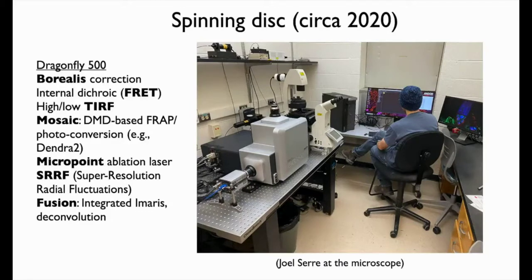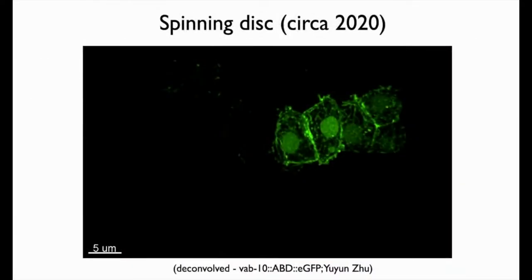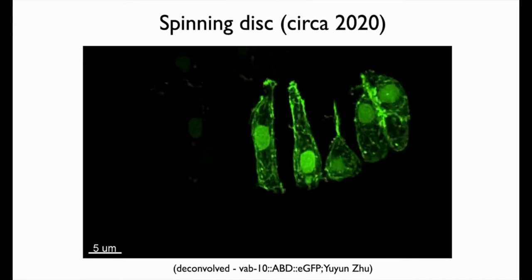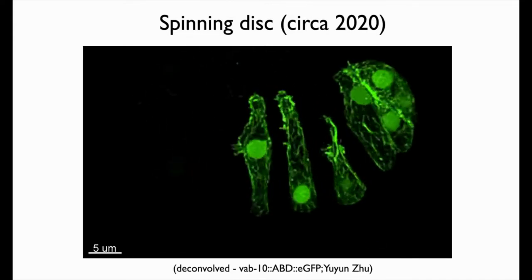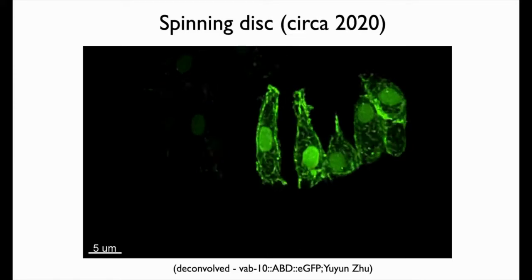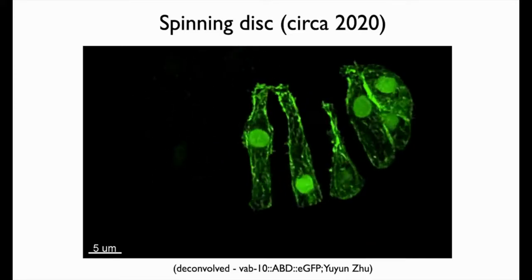All of this is integrated with the Fusion software, which has hooks into Imaris, so we can do deconvolution and a number of things that are really going to benefit our imaging during dorsal intercalation. Here's one of the early products — a deconvolved series of images using this actin reporter generated by Yun Zhu in the lab. The beautiful images show that we can resolve individual actin filaments inside cells as they're undergoing dorsal intercalation.